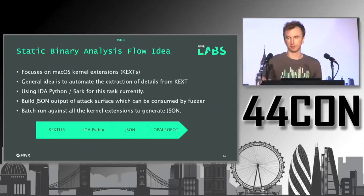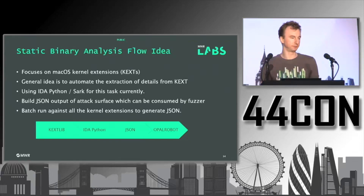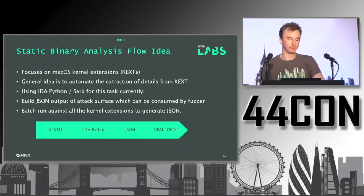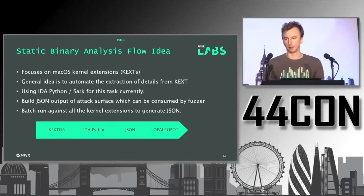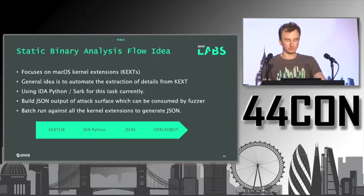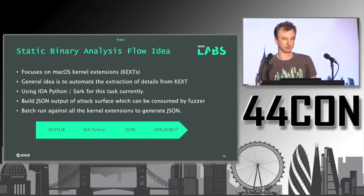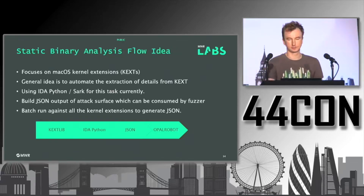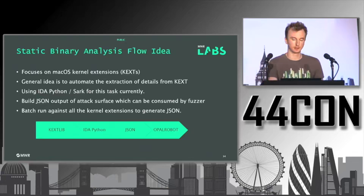That was my utility library underpinning the whole thing. But I needed a way to pull out as much information as possible to build up the attack surface of IOKit. I wanted to automate the extraction of details from the KXTs. Using IDA Python, I scripted this up to build a JSON representation of each device driver, giving a visual representation of the driver's attack surface that could also be consumed by the fuzzer. I batch-ran this against all the KXTs — there are maybe a couple hundred device drivers. The pipeline is: use static binary analysis to extract the attack surface in IDA Python, produce JSON, and feed that into the fuzzer Opal Robot.